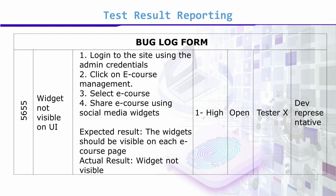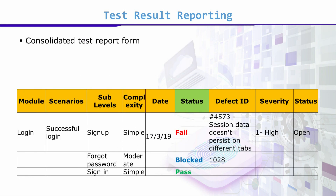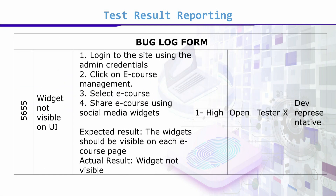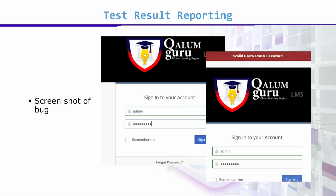So three things we have covered here: number one, we saw the overall stat; number two, we saw the individual pass/fail against each test case; number three, we saw the bug log form. Now combining these three, here is an example — I gave a screenshot on the previous screen as I mentioned, I couldn't fit it in, but let me show it now.